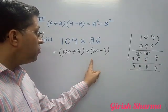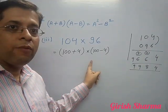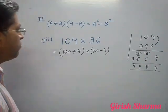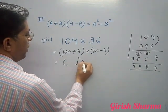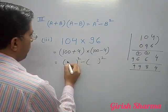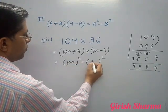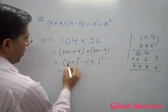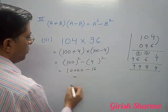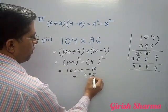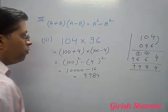But our question is what? We have to solve with help of identity. This is A plus B into A minus B. This will be A square minus B square. What is A square? What is B square? 100 square is 10,000. 10,000 minus 16 is 9,984.